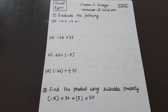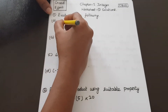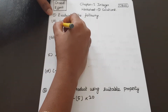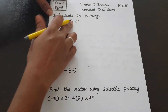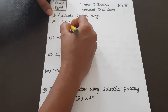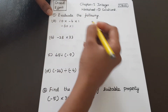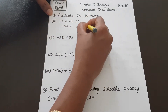10 into minus 6 into 1. This is a multiplication with a negative integer. 10 into 6 is 60, but plus into minus gives minus. So minus 60 into 1 is equal to minus 60.